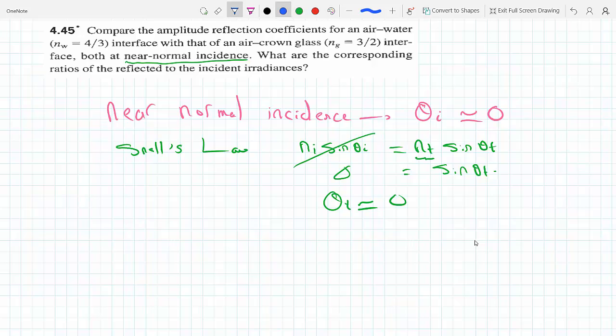If I look at them, for example, equation 4.40 in the textbook says it's equal to n_t cos(theta_i) - this is the case where the electric field is parallel to the plane of incidence - minus n_i cos(theta_t), over the same thing but positive: n_i cos(theta_i) cos(theta_t) plus.